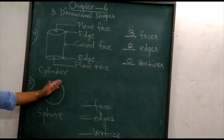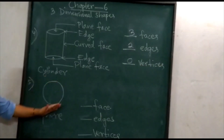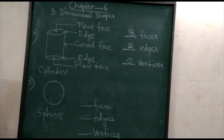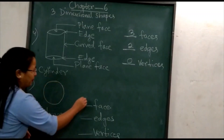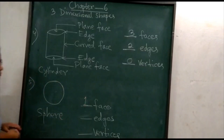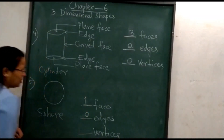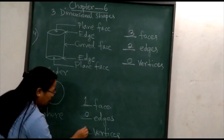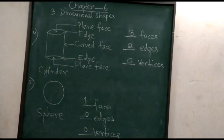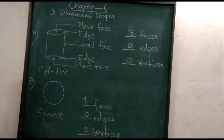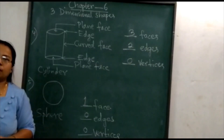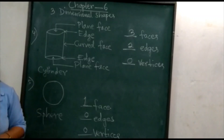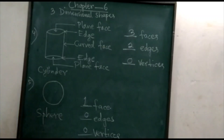This is a sphere. Let's find out the faces, edges and vertices of the sphere. It has only one face. It does not have any edges — zero edges — and zero vertices. That's all for today. I hope you liked it. Visit your school website for the home assignment from this chapter. Thank you.